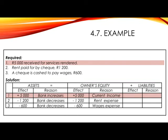Let's have a look at example 4.7. Transaction number 1: 5,000 was received for services rendered. Remember that services rendered would be classified as current income, as you are earning money for giving a service to your customers. Since the money was received, bank is also affected. In assets, you will show plus 5,000 for bank increases. And in owner's equity, you will show plus 5,000 for current income. Notice that we don't need to show that it increases or decreases, because simply by specifying if it's an income or an expense, we can determine that equity is increasing.